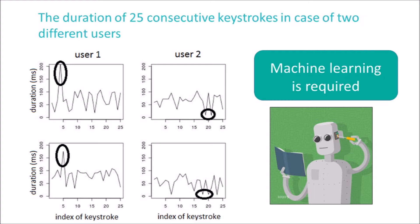The first column belongs to user 1 and the second column belongs to user 2. One can see that the time series of the same user are more similar to each other than to the time series of the other user. For example, an exceptionally long keystroke at about the 5th position is characteristic to user 1, whereas quite short keystrokes at about the 20th position are characteristic to user 2.